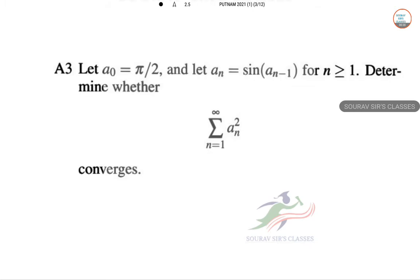First note that since we have sin x < x for all x positive, the sequence a_n is positive and decreasing with a_1 equal to 1.